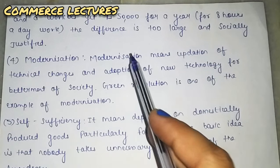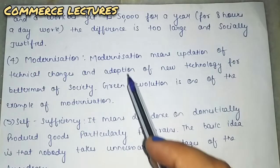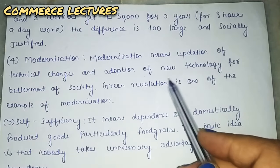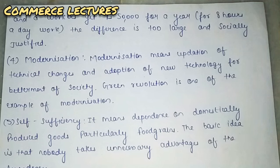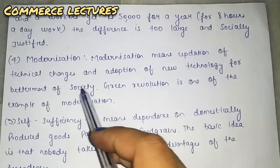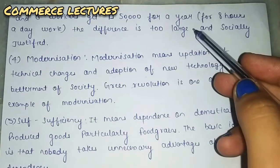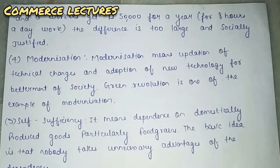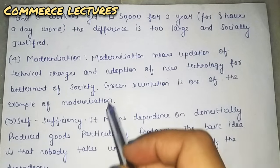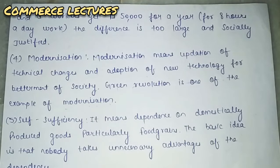The fourth long term goal is modernization. Modernization means adoption of technical changes and new technologies to improve productivity and production. The Green Revolution is an example of modernization — the government launched many schemes, training programs, and initiatives that increased agriculture productivity through new techniques.